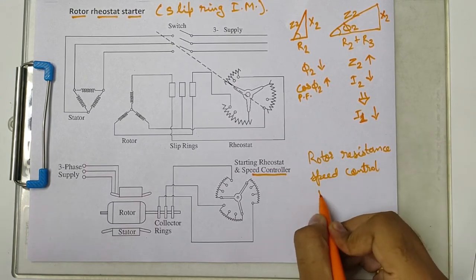As you can read here it is starting rheostat as well as speed controller, because changing the rotor circuit resistance will also have effect on the speed of the motor. We can also use this setup as a method to control the speed of the motor. This speed control method is called rotor resistance speed control.